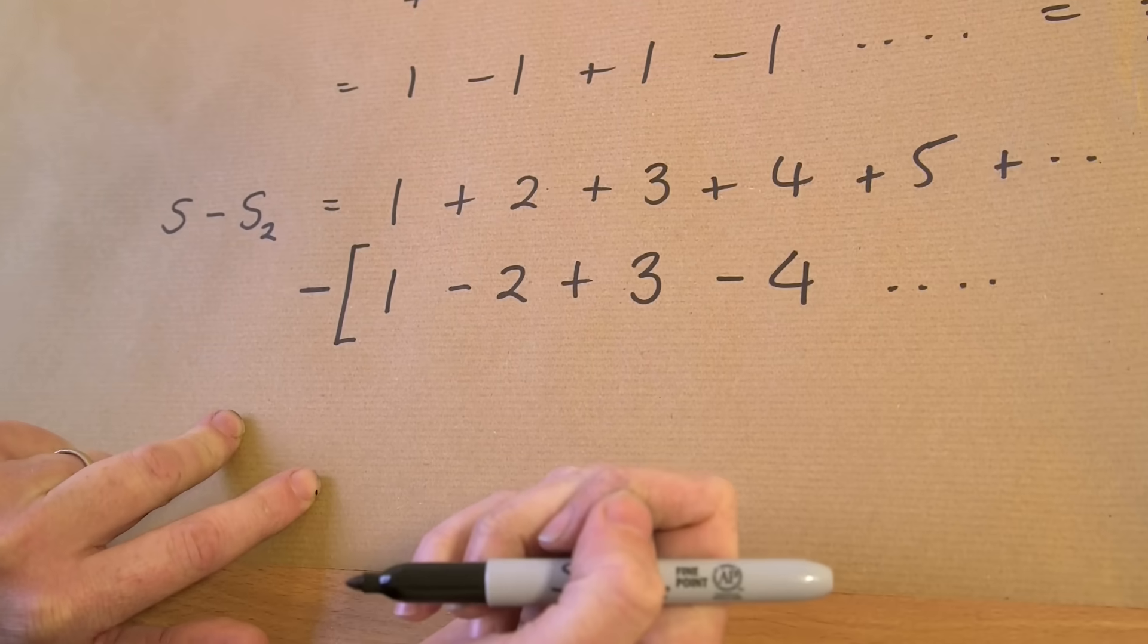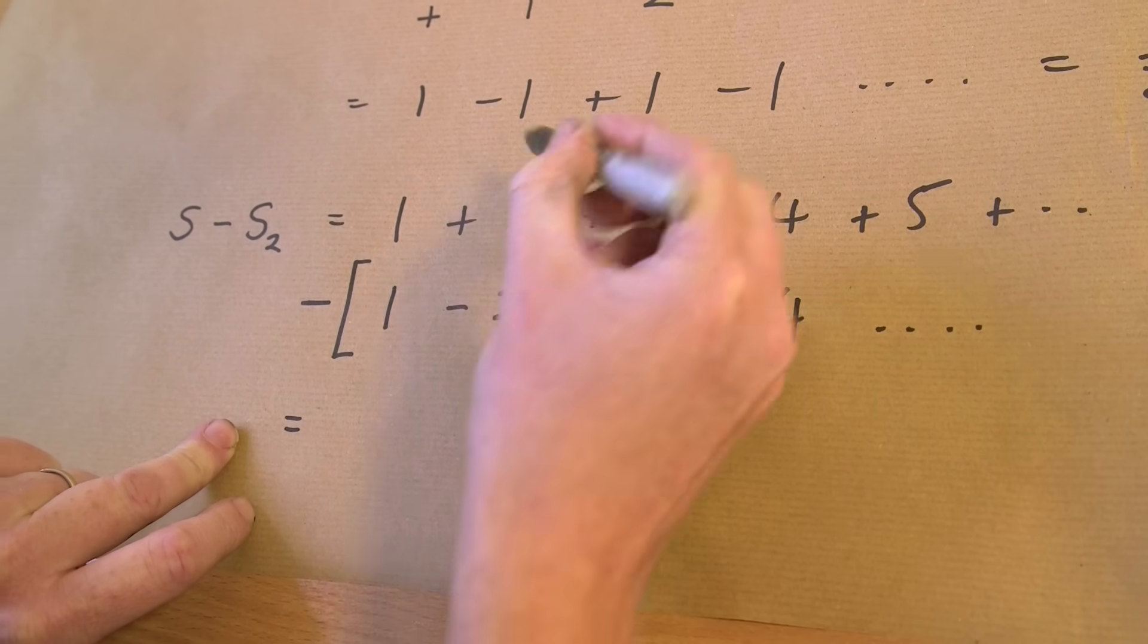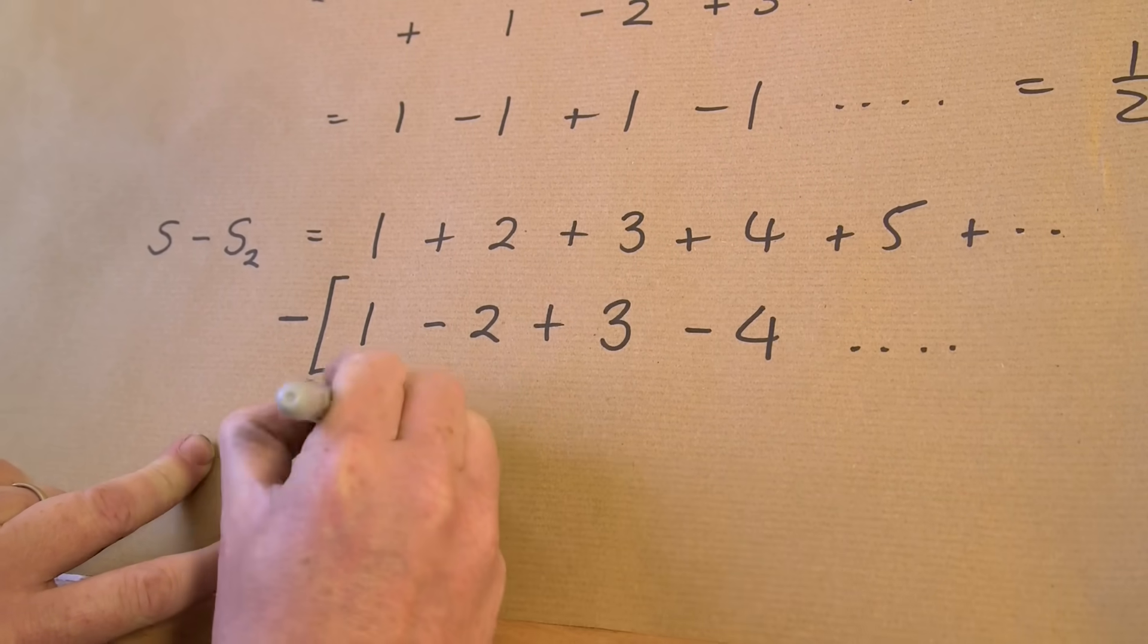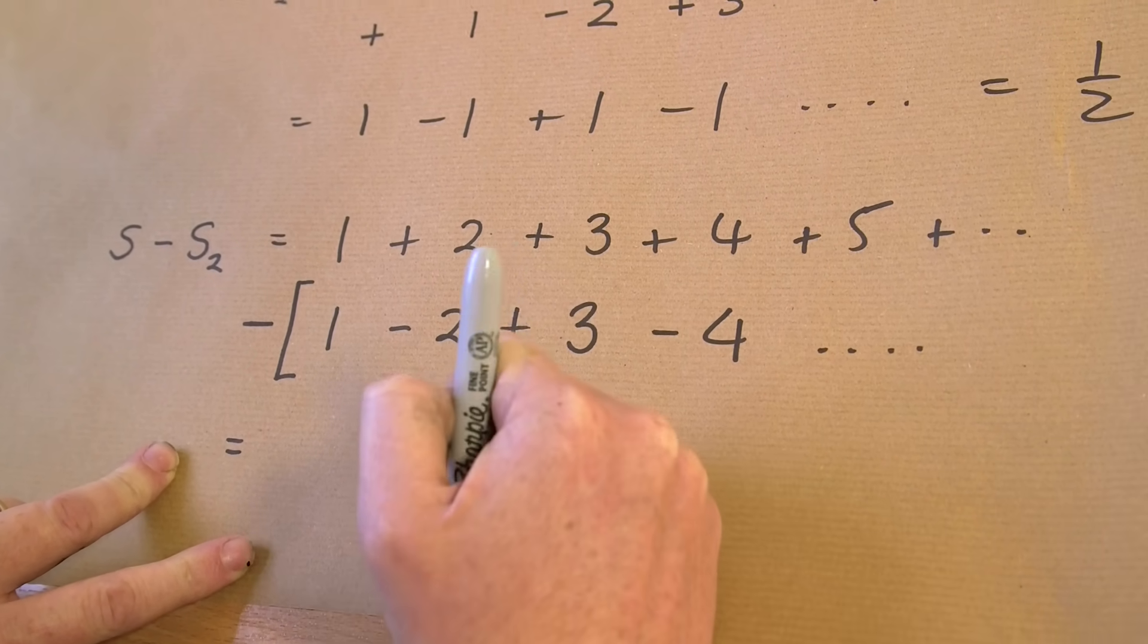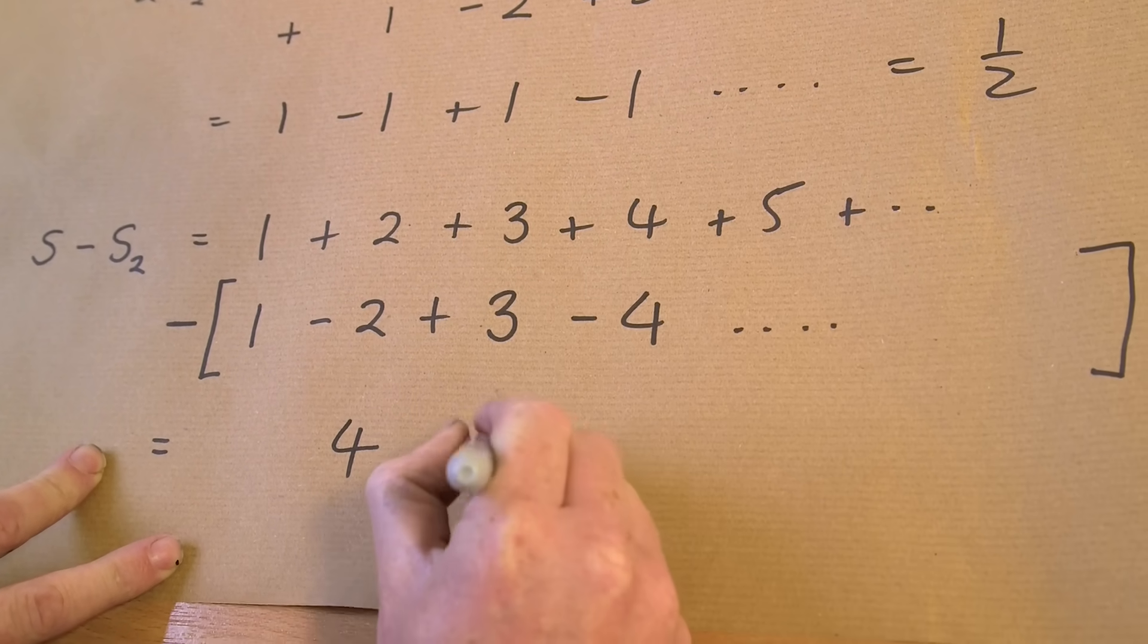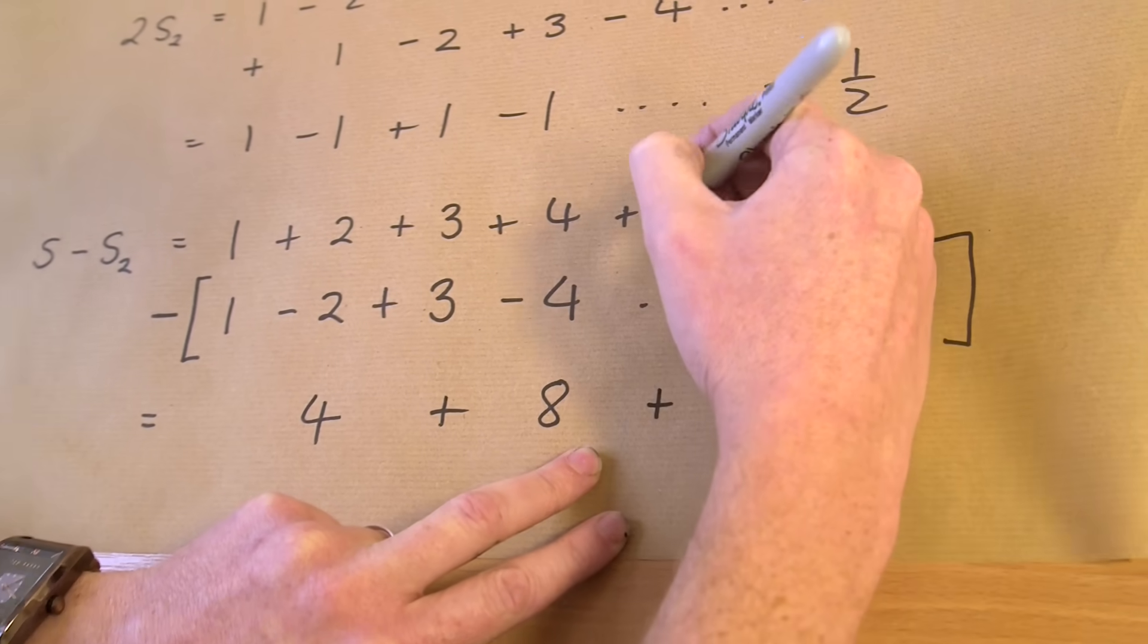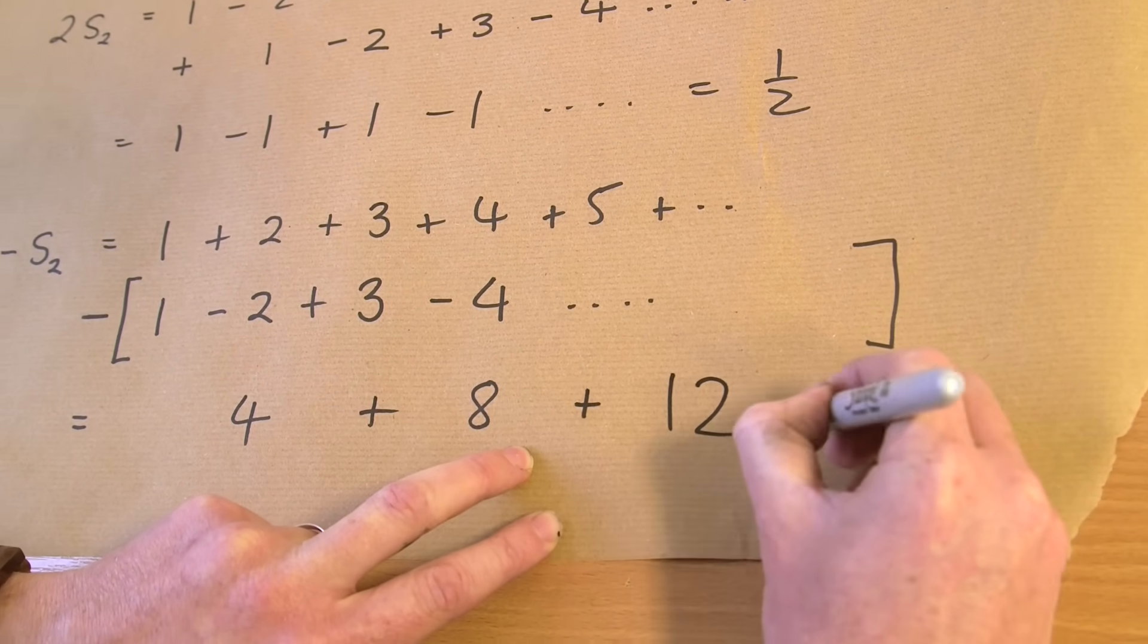1 minus 1, what's that? Zero. Yeah, exactly. So I get nothing from that bit. 2 minus minus 2 is 4. 3 minus 3, zero. 4 minus minus 4 is 8 and so on. And the next one I'm going to get from the 5's I get nothing. From the 6's I get 12 and so on. And it proceeds in that way.